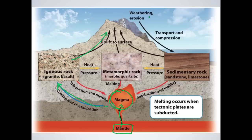Once it's on the surface, the elements work on it and weathering and erosion occur. Weathering is where a rock is broken down; erosion is where those sediments are taken away. Those sediments get transported downslope, usually via wind, glacier, or water, and then they start to layer on top of each other — one year of sediment, two years, three years, four years — and they all compress and form sedimentary rock.